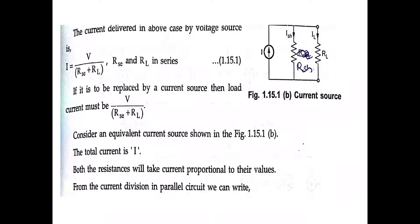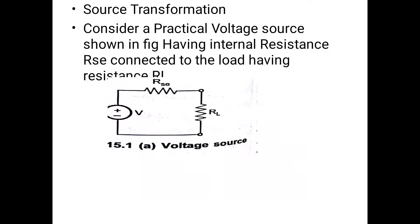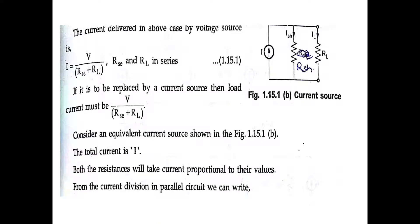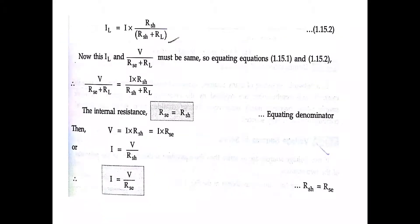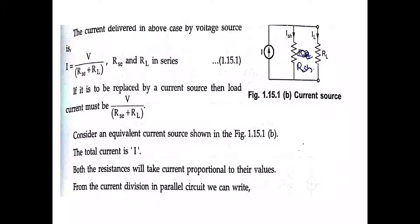The equivalent current source has RSH in parallel with RL. In the current source configuration, RSH is in parallel with RL. Current ISH flows through RSH and current IL flows through RL. The basic concept is that current equals V divided by R, where R is RSC. In the previous diagram RSC and RL are in series, but when replaced by a current source, the load current must be V divided by (RSC + RL).